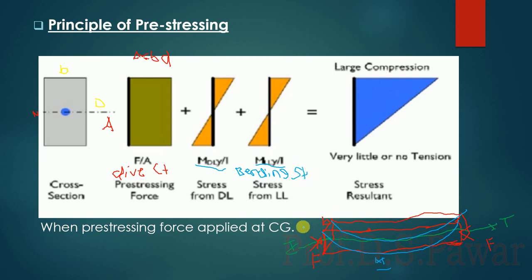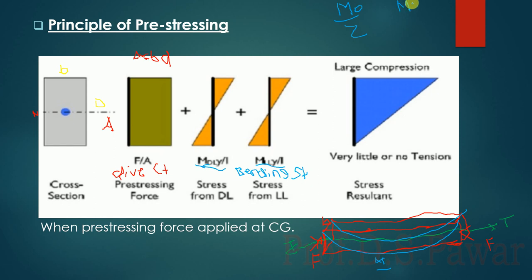How to calculate the bending stresses? We know the formula — bending stress equals M by Z. Here they have calculated two moments: first is moment due to dead load, M_D, and moment due to live load, M_L. So bending stress is M_D by Z plus M_L by Z.